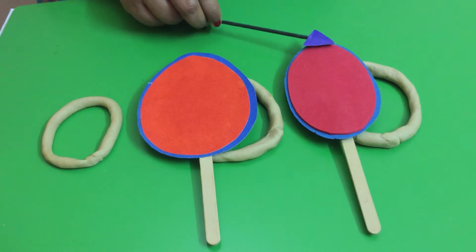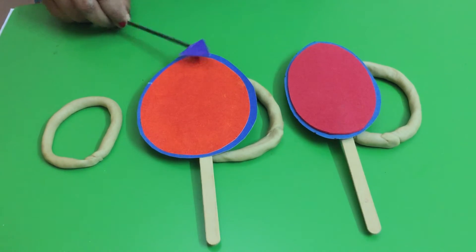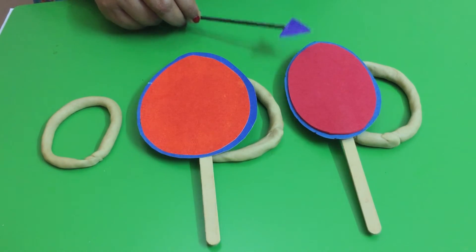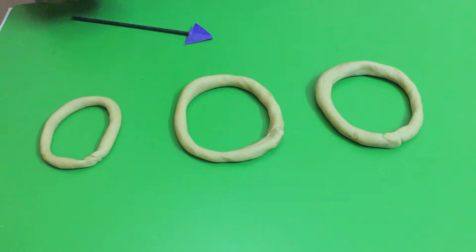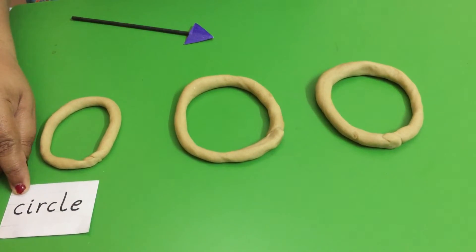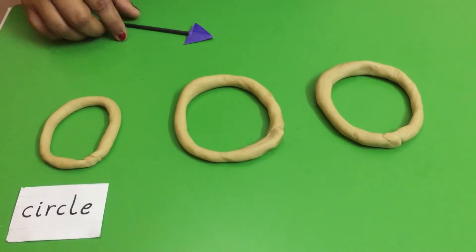So children, now we are going to see the difference between an ellipse and oval. Both are elongated circles. So here I have three circles which I am going to use to make ellipse and oval. The first circle is circle. The name circle looks like this.